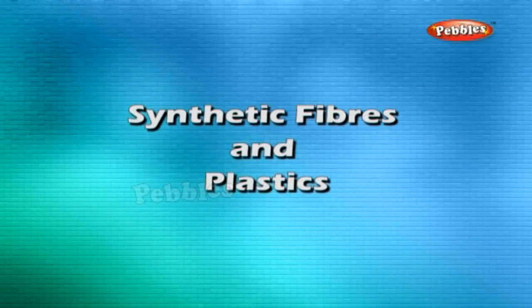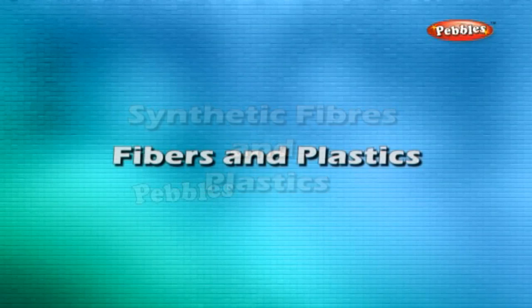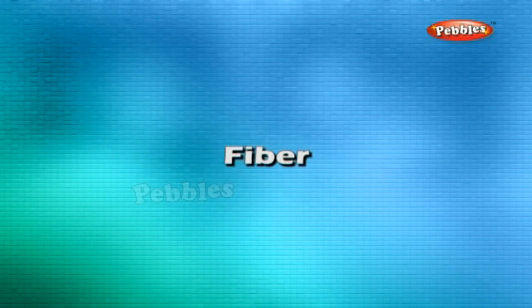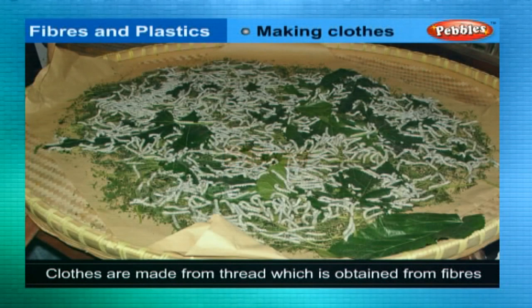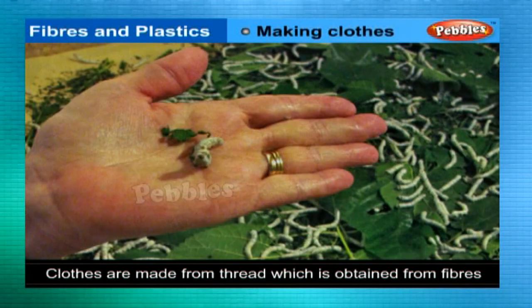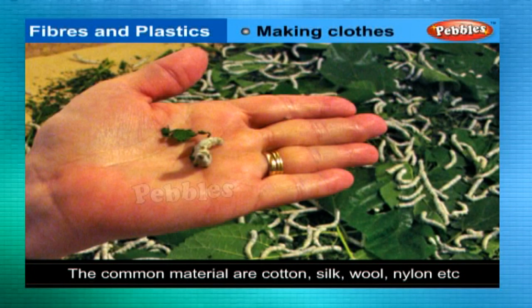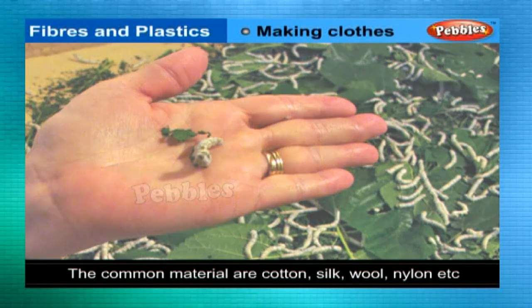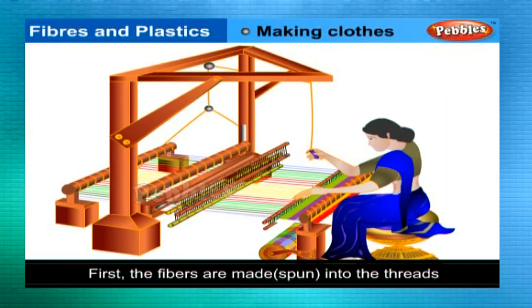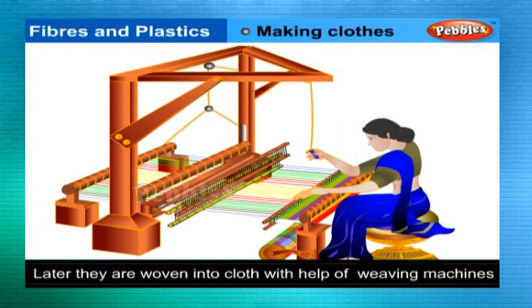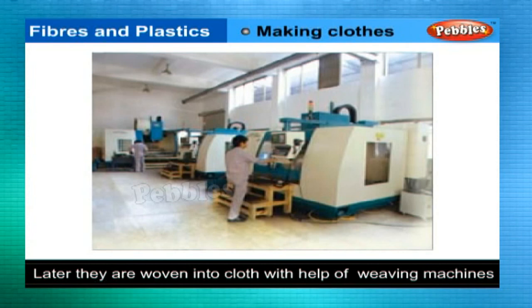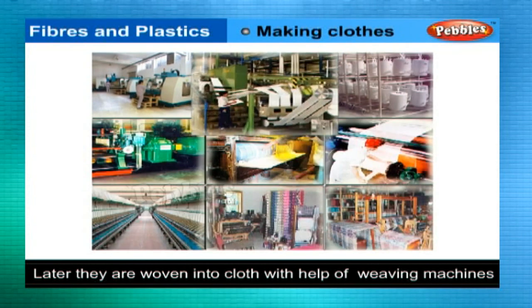Synthetic fibers and plastics: fiber and plastic clothes are made from thread which is obtained from natural or artificial fibers. The common materials are cotton, silk, wool, nylon, and other synthetic artificial fibers. First, the fibers are spun into threads and later they are woven into cloth with the help of looms or weaving machines.